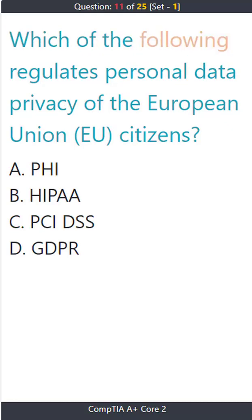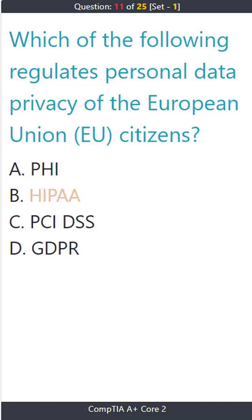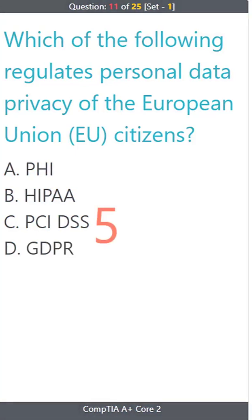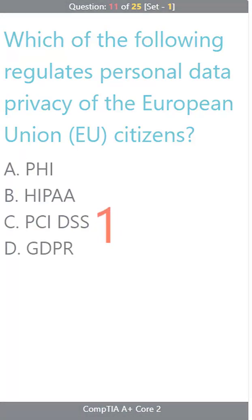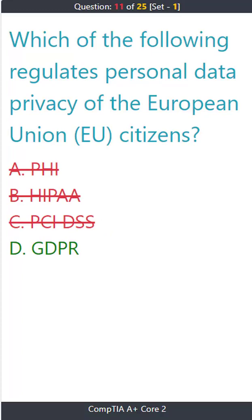Question 11: Which of the following regulates personal data privacy of European Union (EU) citizens? A) PHI. B) HIPAA. C) PCI DSS. D) GDPR. The correct answer is D: GDPR.